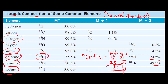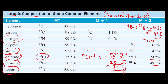For bromine, the isotopes are almost equal: 79Br to 81Br is 50.5 to 49.5. Dividing both by 49.5 gives approximately 1 to 1. So the M+ and M+2 ion peaks are almost exactly the same height. If this is the case, then the heteroatom is bromine.